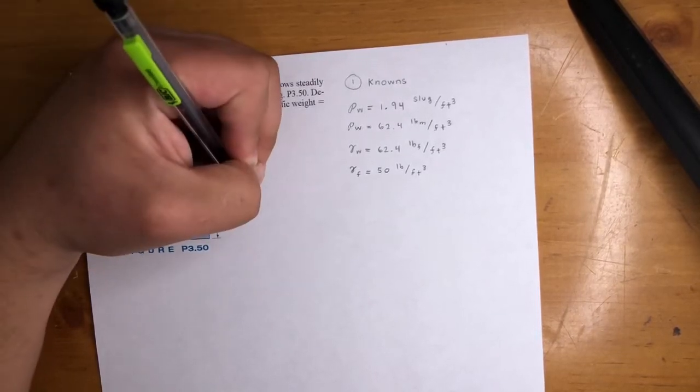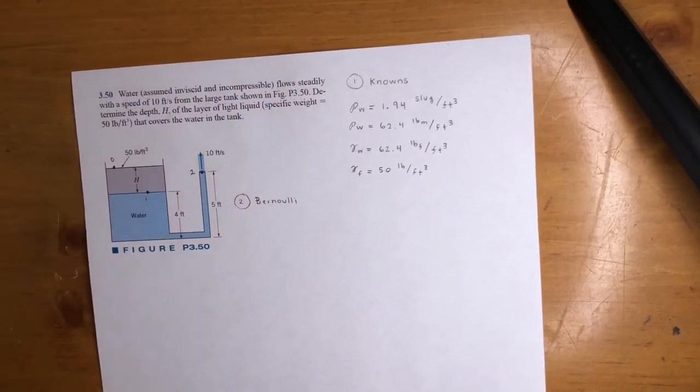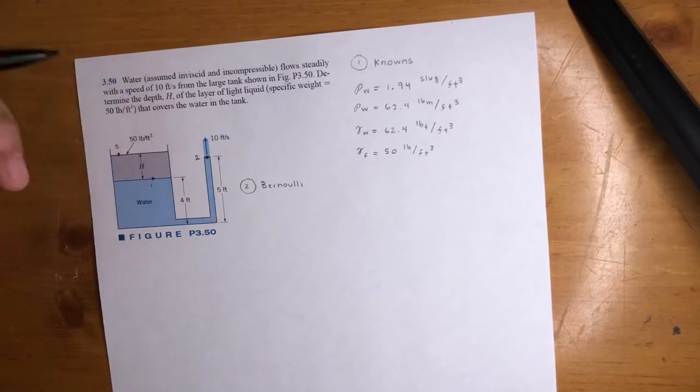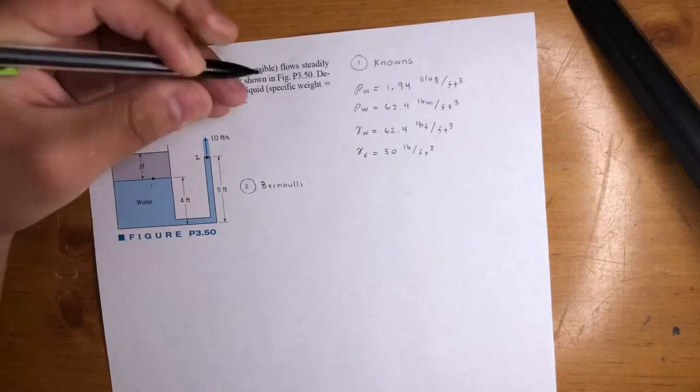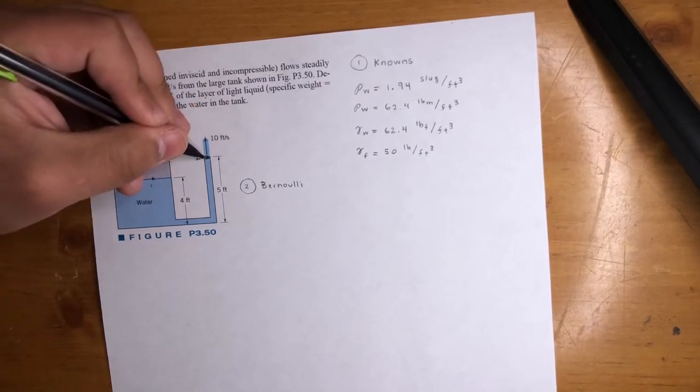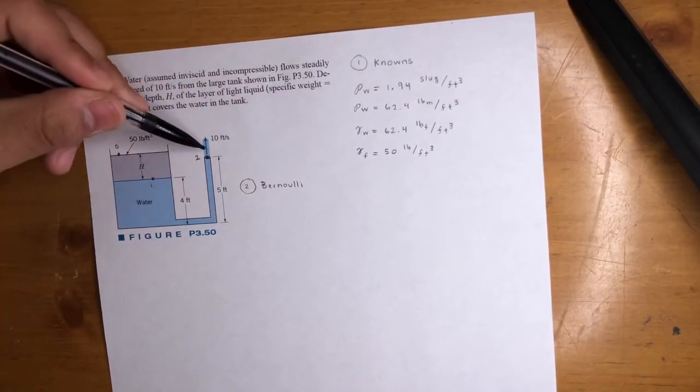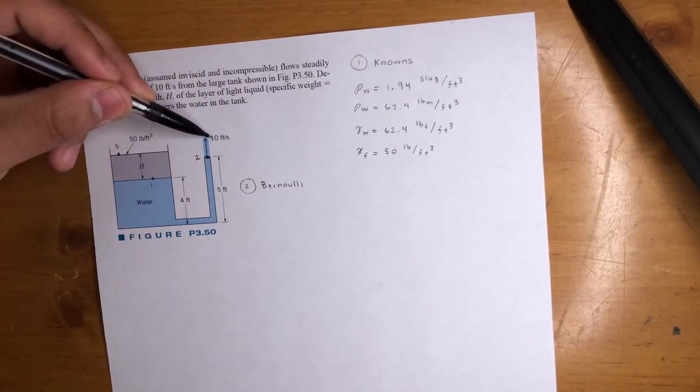So let's do Bernoulli. And again, you take Bernoulli where you know the most knowns, if that makes sense. So this is a free jet. At the very exit of a free jet, at this point right here, the pressure is zero because it's atmospheric. And then there's a velocity. In this case, they give it to us.